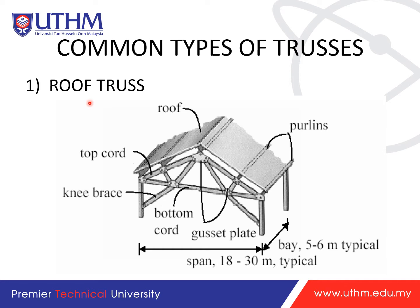Looking at a common roof truss example: you have the top cord at the top, knee bracing for support, the bottom cord at the bottom, and gusset plates to join the joints. You also have purlins — since you have many plane trusses, you pull them together with purlins. A typical span is between 30 meters wide with bays of five to six meters.